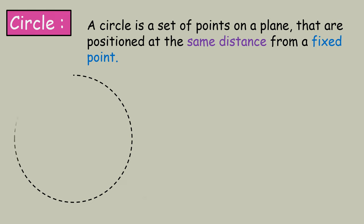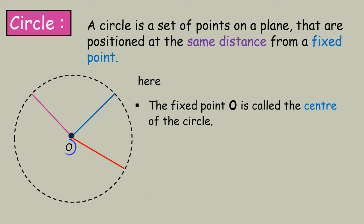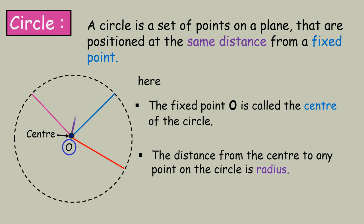Definition of a circle. A circle is a set of points on a plane that are positioned at the same distance from a fixed point. Here, the fixed point O is called the center of the circle. The distance from the center to any point on the circle is the radius.